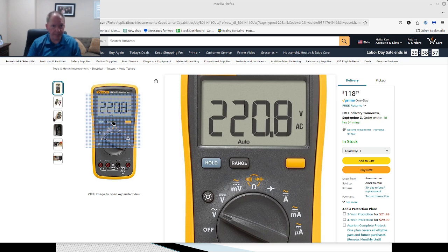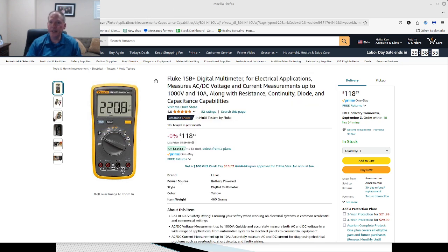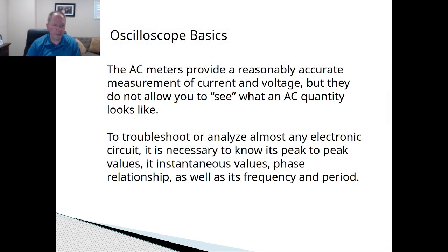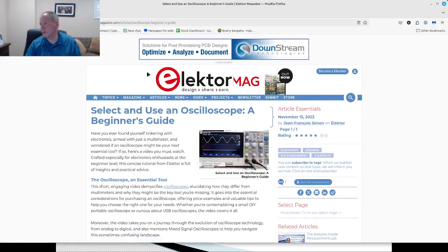And that's what type of value? Well, of course, that's RMS. And then if we look at an oscilloscope, let me get a good image here. So this image is of an oscilloscope.